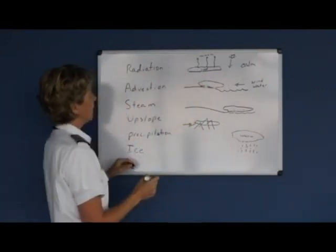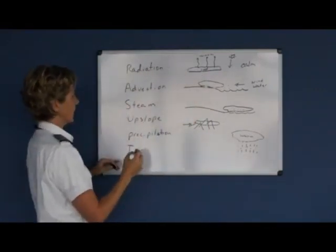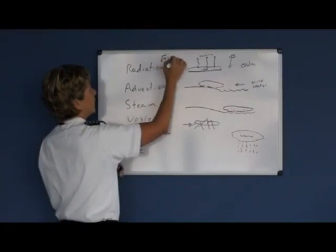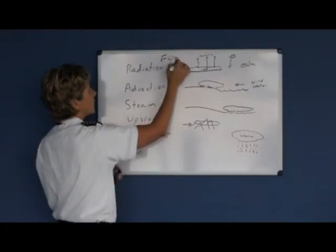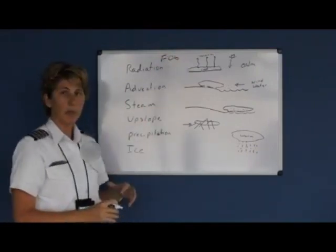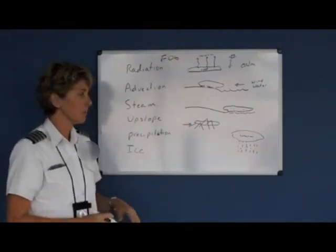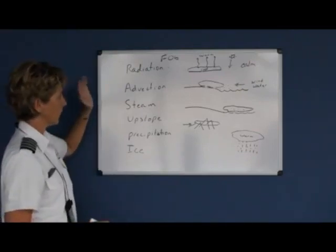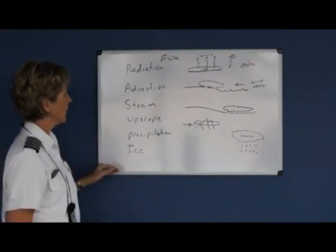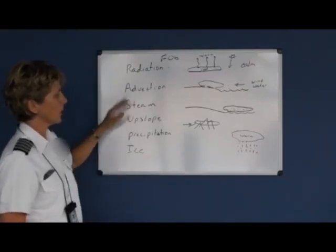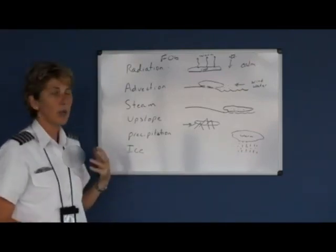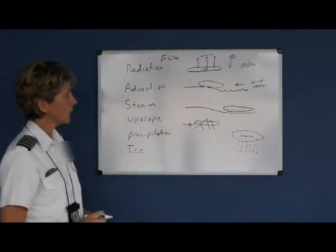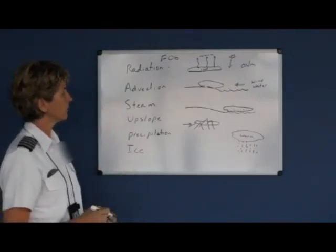Ice fog is any one of the above fog types where the temperature is below freezing. So you could have ice radiation fog, and so on — ice fog is simply any of those fog types occurring when the temperature is below freezing.